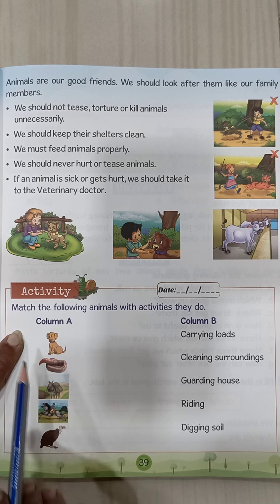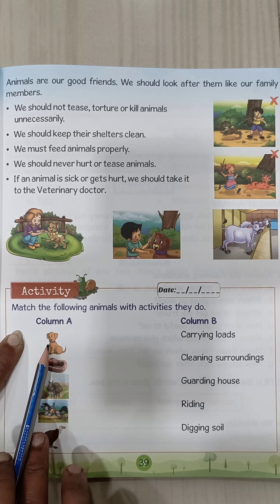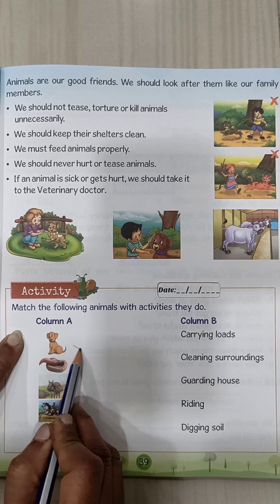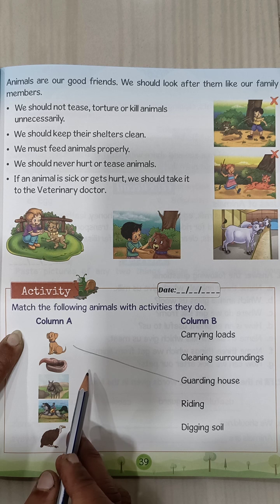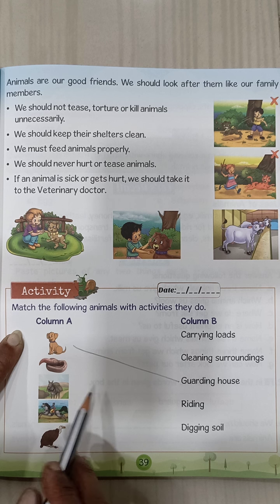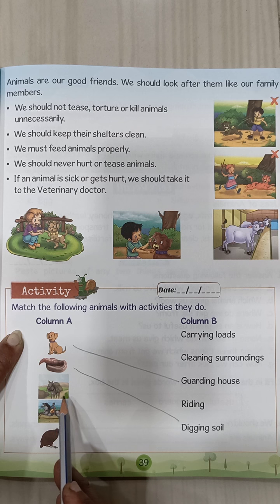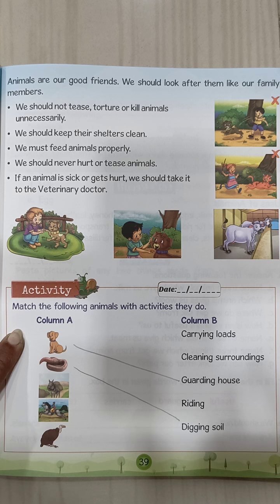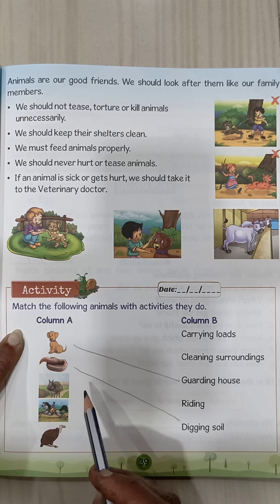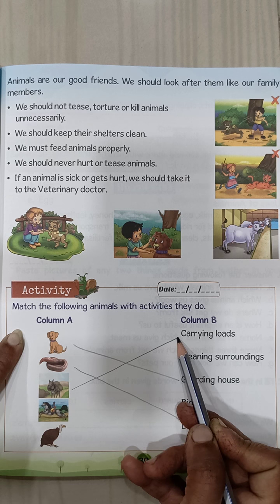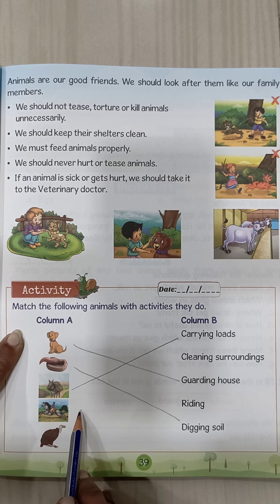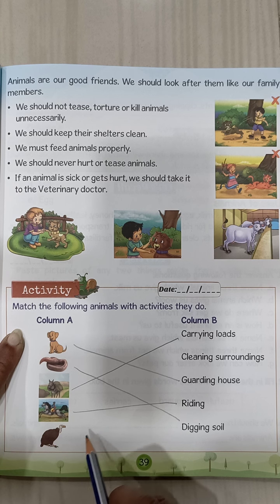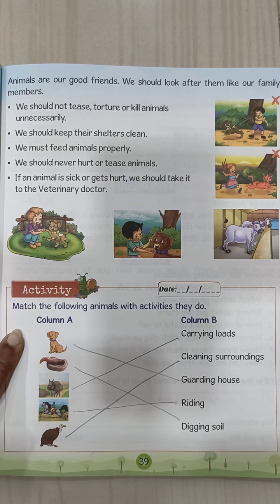Activity time: match the following animals with the activity they do. The dog guards the house. The earthworm is digging soil. The horse is used for riding. The donkey carries loads. The vulture is used for cleaning the surroundings. Activity completed.